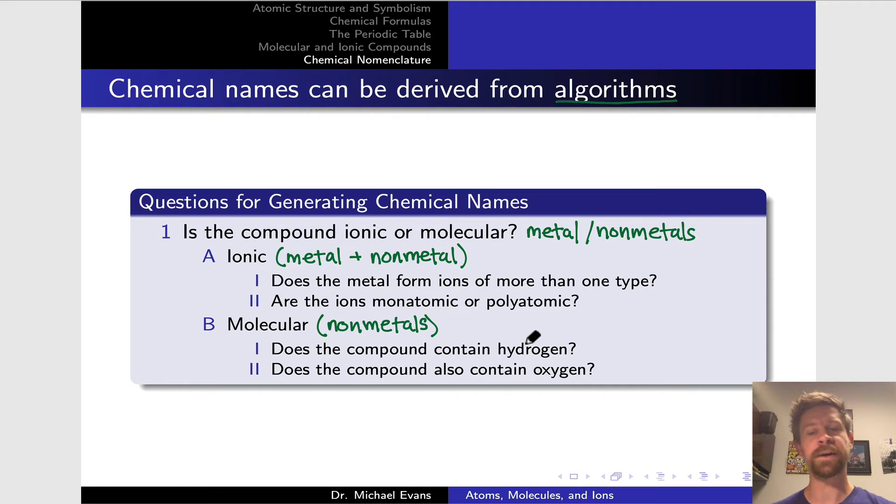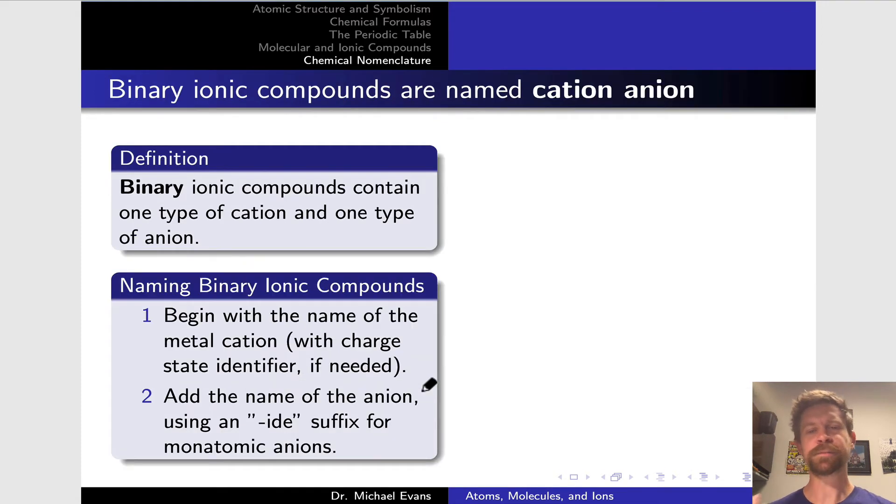For molecular compounds involving the non-metals, the system is a little easier to apply, we might say. But there are some questions that we do still need to ask. Number one, does the compound contain hydrogen, and is the hydrogen acidic? If so, we're going to name this generally as an acid, or almost like an ionic compound, in which hydrogen serves as a cation. Secondly, does the compound also contain oxygen? So an acidic hydrogen plus an oxygen is going to give rise to what we call an oxyacid. And we'll look at the system for naming oxyacids here in a second as well.